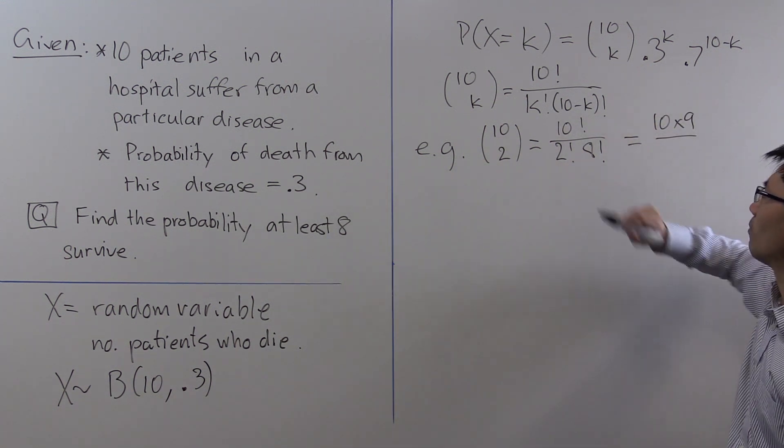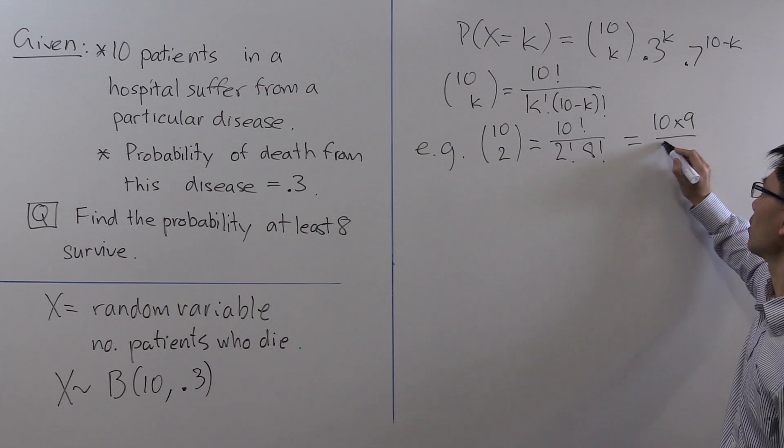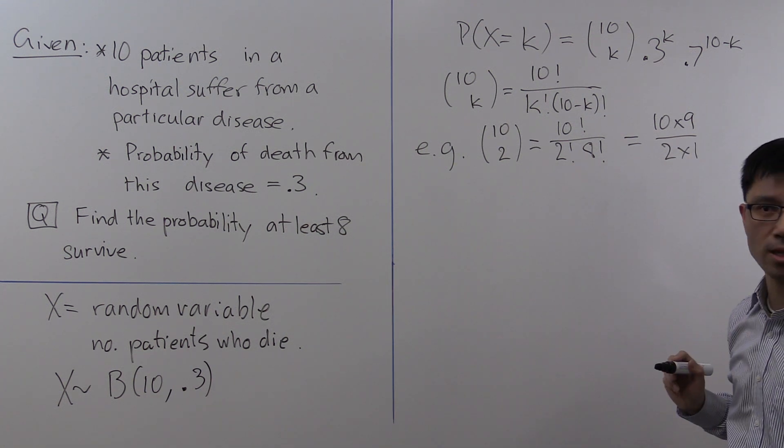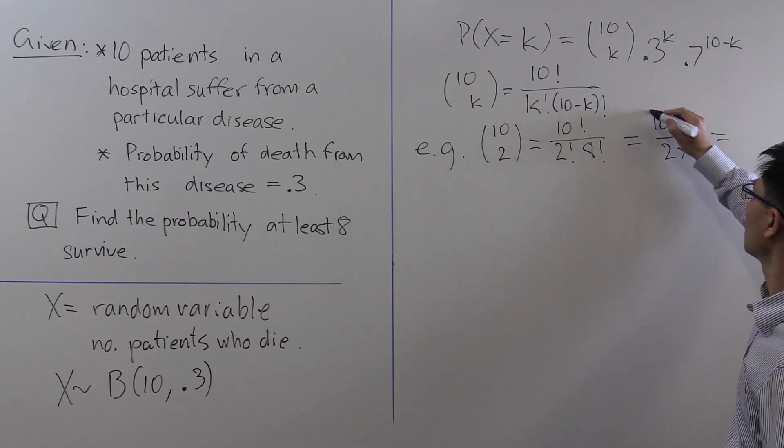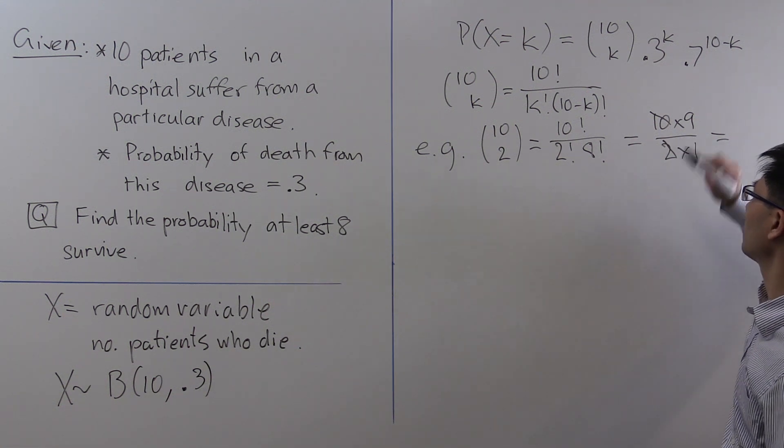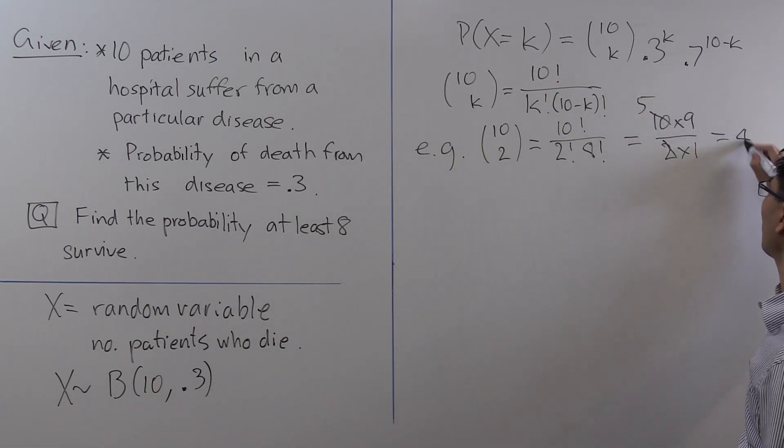The 2 divides into 10 leaving 5, and 5 times 9 equals 45.